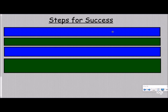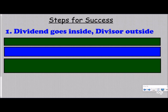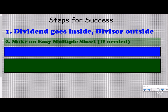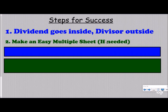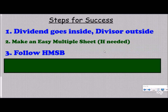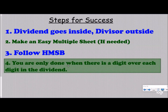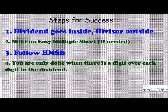Here are your steps for success when trying to divide using the standard algorithm. Step one: the dividend goes inside, the divisor goes outside. Step two: make an easy multiple sheet if needed. For one digit divisors you might not need it if you have your basic facts memorized, but it will help you down the road. Step three: follow HMSB — How many groups? Multiply, subtract, bring down. You are only done when there is a digit over each digit in the dividend.